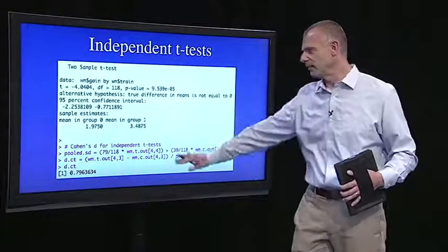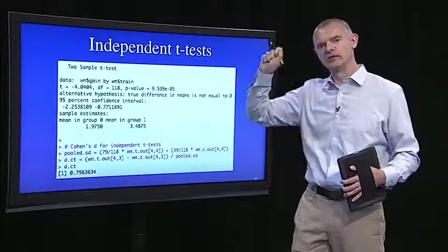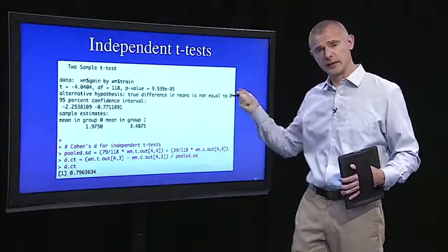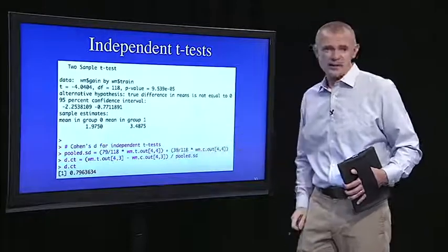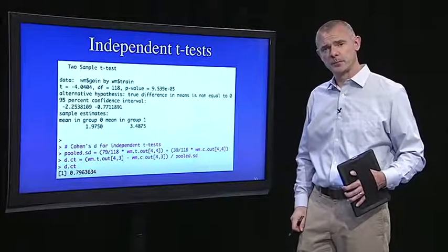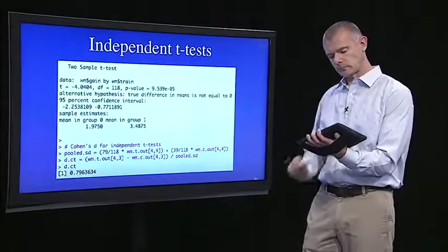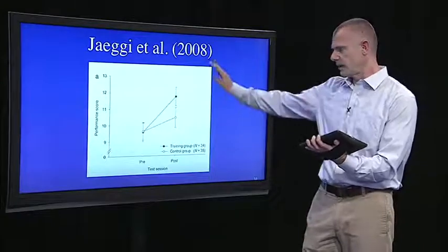Again, what does all this mean together? It means that the difference in the gain scores between training and control is significant. And it's a pretty large effect size. Cohen's D of 0.8 is pretty respectful. So that's evidence that this training regimen works.